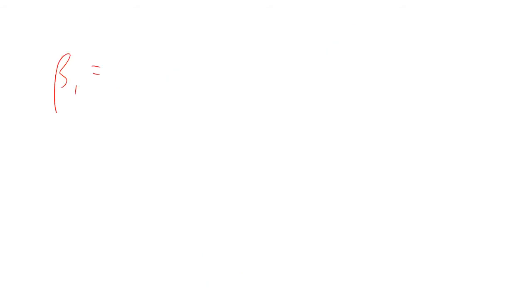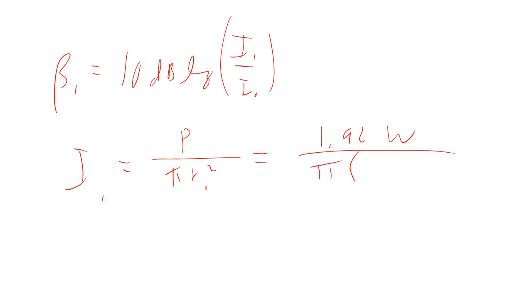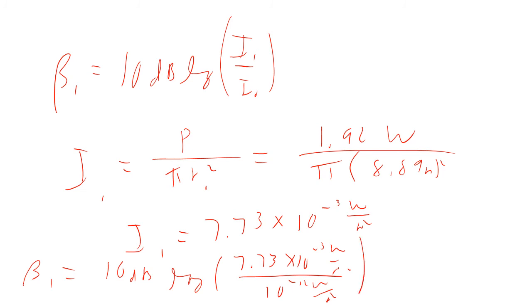For person 1 with the horn, the intensity uses a circular area πr²: I₁ = 1.92 W ÷ (π × (8.89 m)²) = 7.73 × 10⁻³ W/m². The sound level is 10 × log(7.73 × 10⁻³ / 10⁻¹²) = 98.9 decibels — way louder than the 85 dB with the omnidirectional speaker.